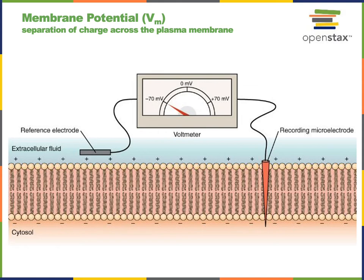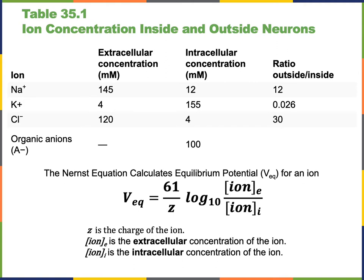The voltmeter will compare the charge inside of the cell to the charge outside of the cell. Typically, the resting membrane potential in a neuron is around negative 70 millivolts. The membrane potential results from the separation of ions by the plasma membrane. There's a high concentration of sodium and chloride ions in the extracellular fluid, and a relatively high concentration of potassium ions in the intracellular fluid. There's also a high concentration of organic anions with a negative charge, which are mostly proteins found in the cytosol that are too large to cross the plasma membrane.